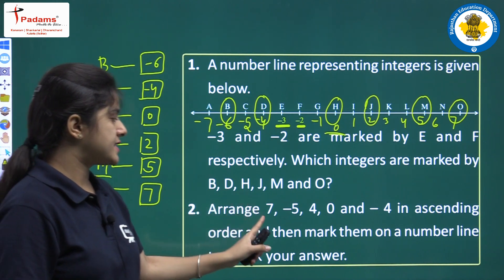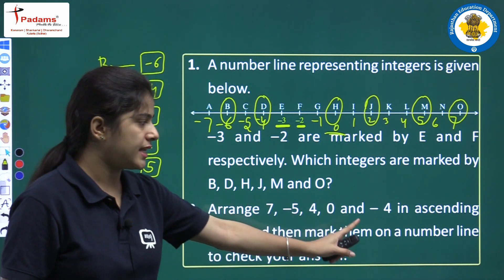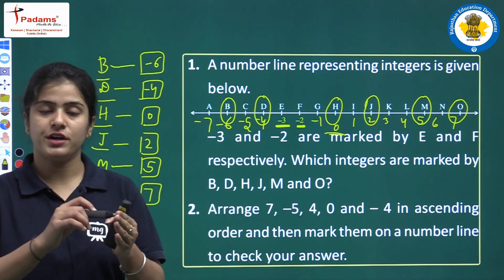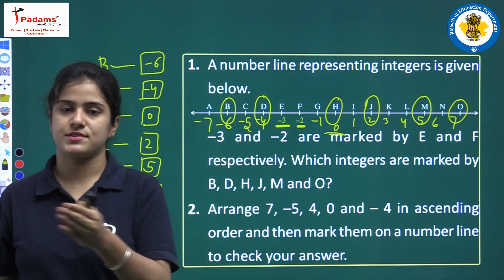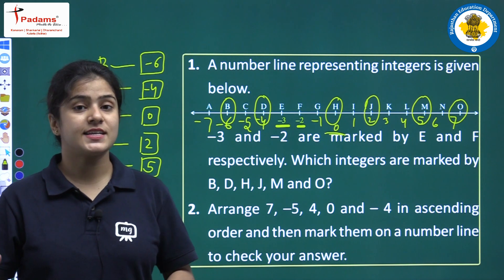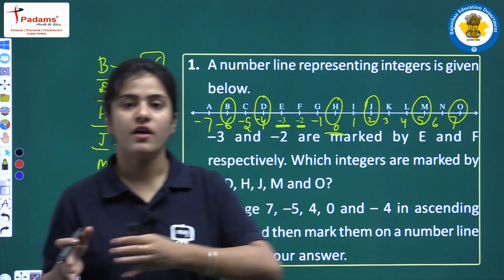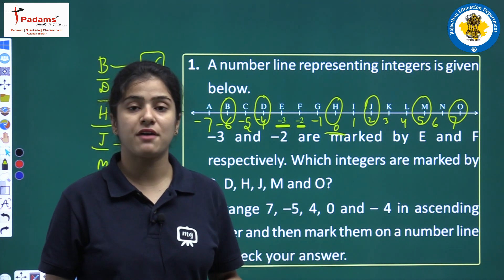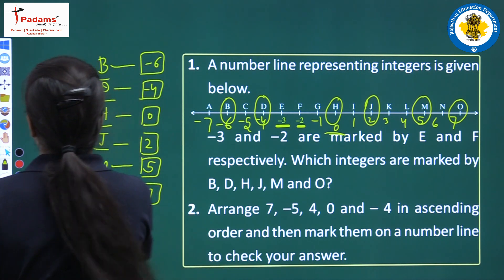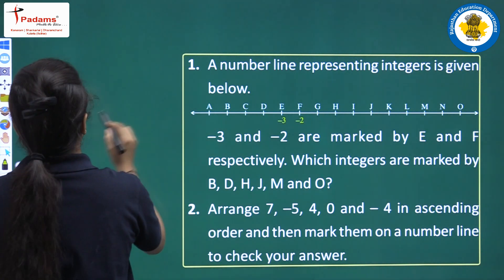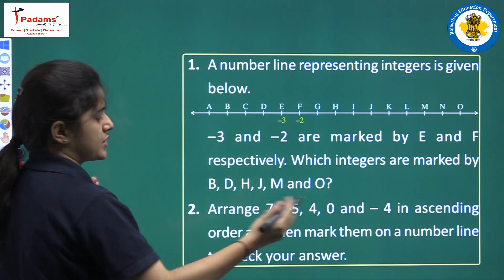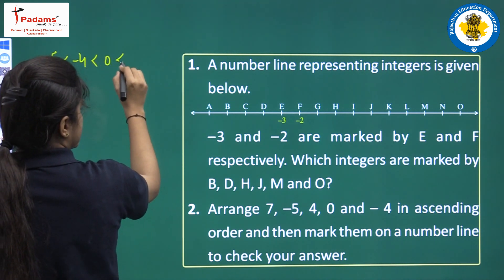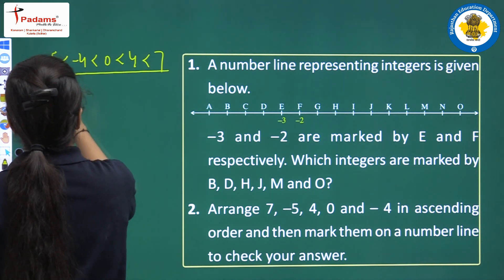Next, arrange 7, minus 5, 4, 0 and minus 4 in ascending order, then mark them on a number line to check your answer. Ascending order means we first write the smallest number then the largest — from smaller to larger, that is from the left side of the number line to the right side. The ascending order is: minus 5, minus 4, 0, 4, 7.